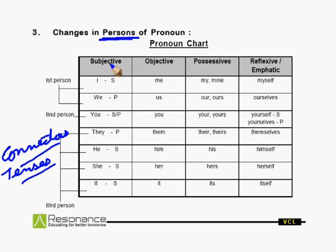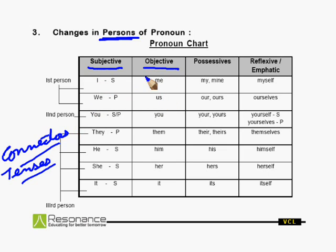As far as pronouns are concerned, we can have a subjective case followed by the objective case. 'I' — objective case is 'me'. 'We' — objective case is 'us'. 'You' is not changed, remains 'you' itself. 'They' changes into 'them'. 'He' into 'him'. 'She' into 'her'. And 'it' is also not changed.